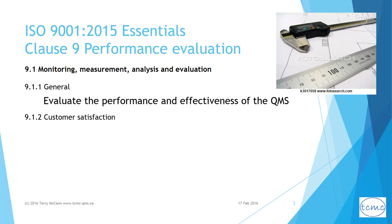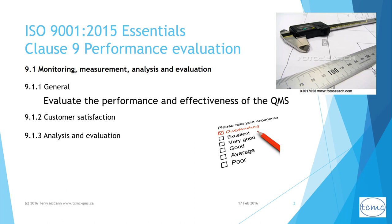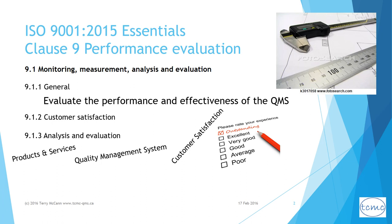The second segment states that regardless, customer satisfaction and perceptions must be one of the things that is monitored, but the organization can choose how to do this. The third segment requires the organization to analyze the data and information obtained by monitoring and measuring, and then evaluate all of the following as a requirement: conformity of products and services, the degree of customer satisfaction, the performance and effectiveness of the quality management system, the effectiveness of planning, the effectiveness of risk-based thinking, performance of external suppliers, and the need for improvements to the QMS.